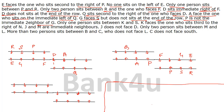Only one person sits between K and S. S is placed, so with a gap of one, K is positioned. The next clue: K faces the one who sits third to the right of N. Counting three positions to the right of N gives the person who faces K. This determines N's placement in the arrangement.